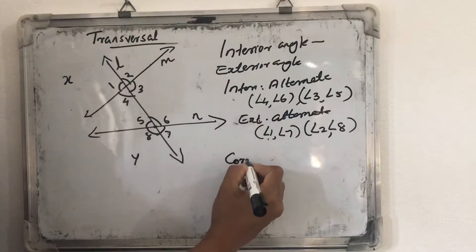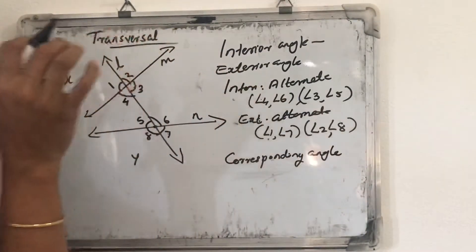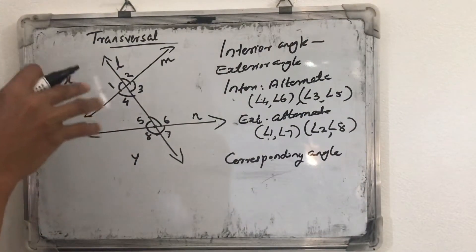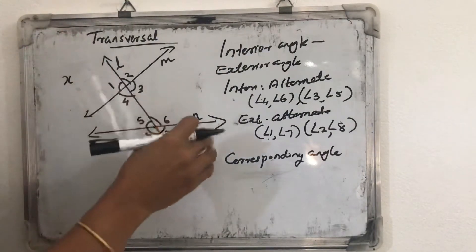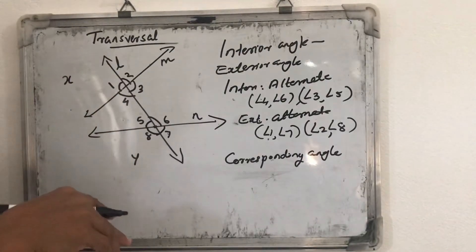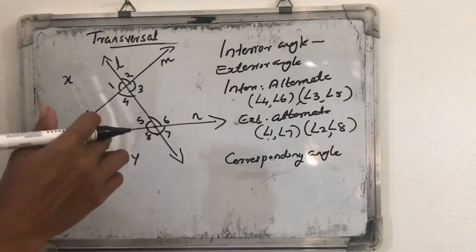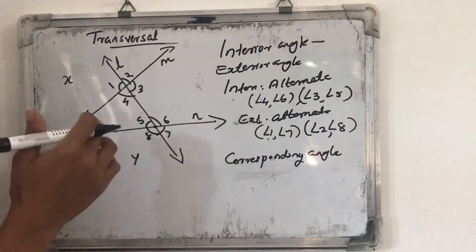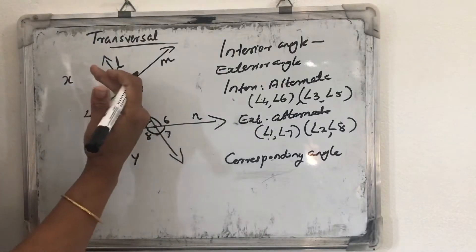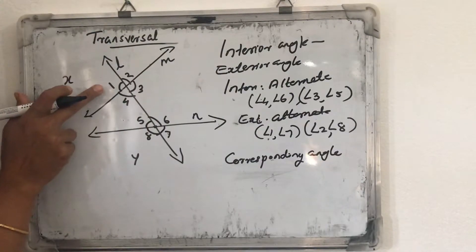Next are corresponding angles — very very important. Don't miss this. All of you study today the names and which pairs of angles form corresponding angles. Corresponding angles are also a pair of angles. They are on the same side of the transversal, and one special feature is: if one angle is exterior, the other will be interior.